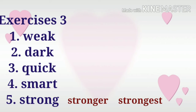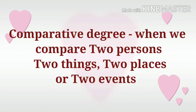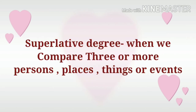Now, can you tell me the three degrees of comparison? The first degree is the positive degree — when you describe one person, one place, one thing, one event. The second degree is the comparative degree — when we compare two persons, two things, two places, two events. We call this the comparative degree. While the superlative degree is when we compare three or more persons, places, things, or events.